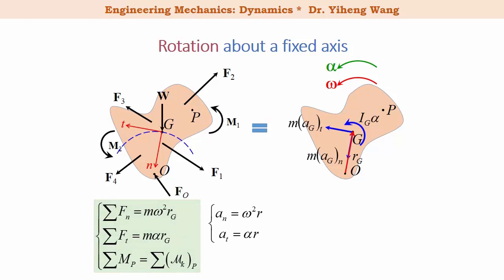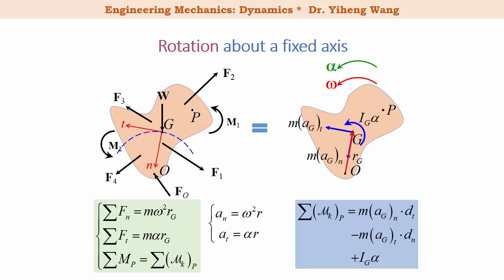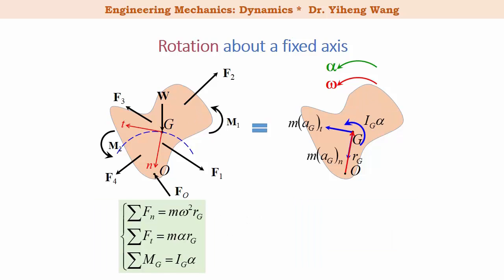We can now rewrite the set of equations accordingly. The last equation — resultant moment about arbitrary point P — equals the total kinetic moment about P, calculated by treating m·A_Gt and m·A_Gn as inertia forces with moment arms, and I_G·α as a free couple moment. Choosing to summarize about the gravitational center G, the third equation simplifies to: resultant moment about G = I_G·α.